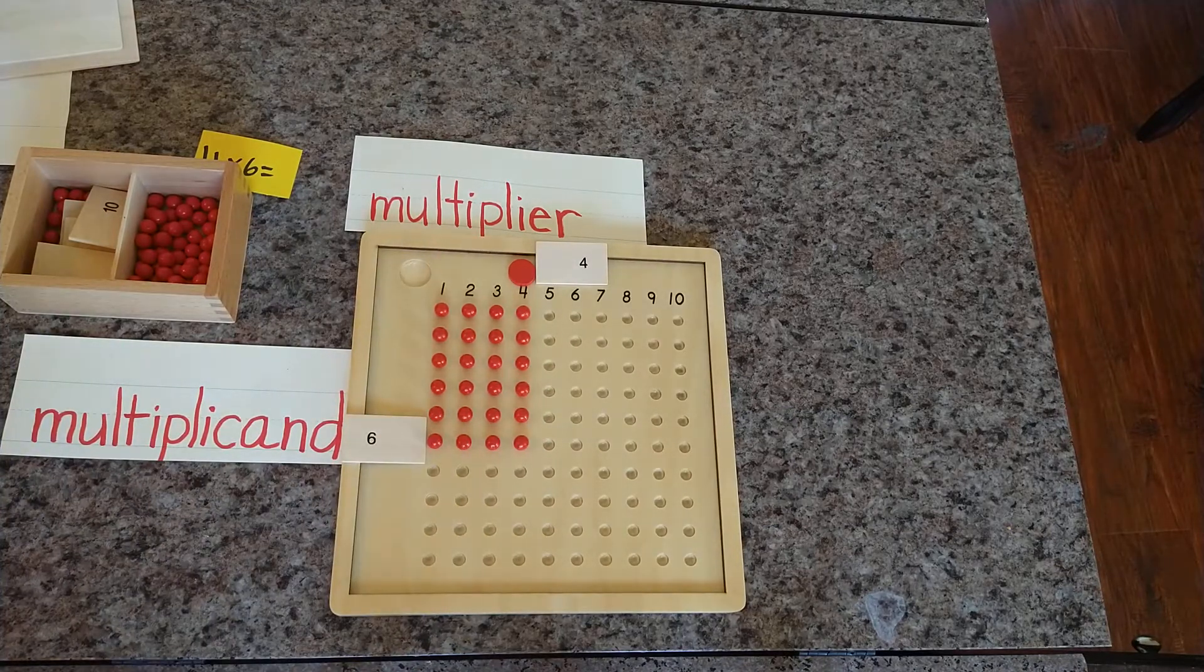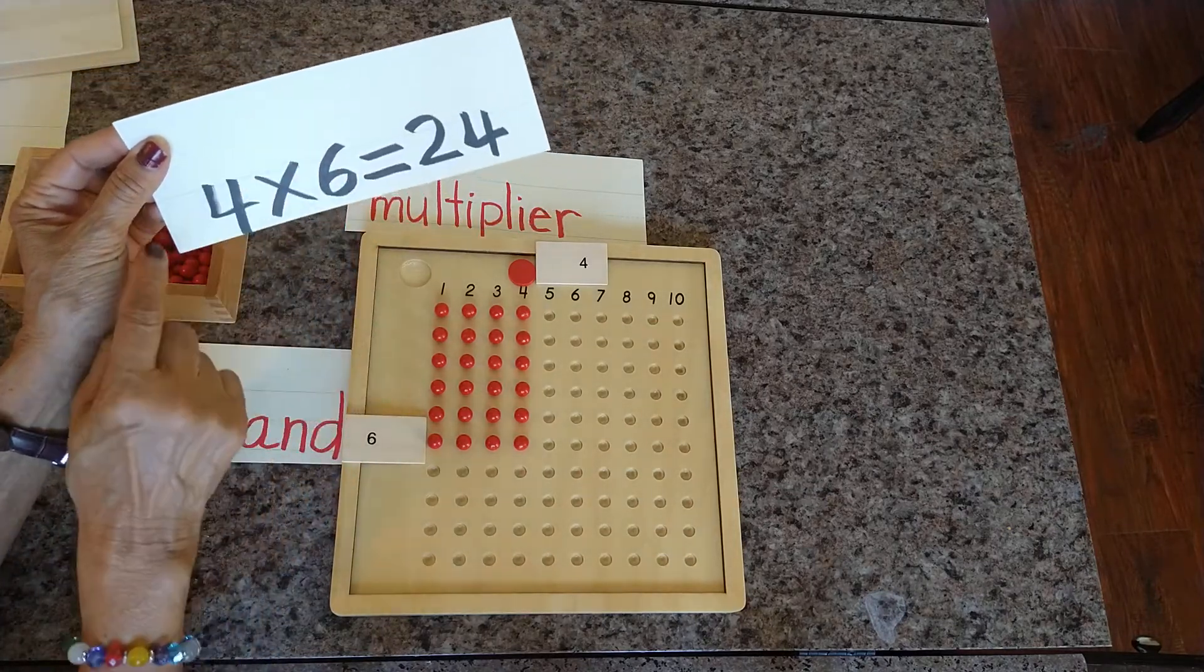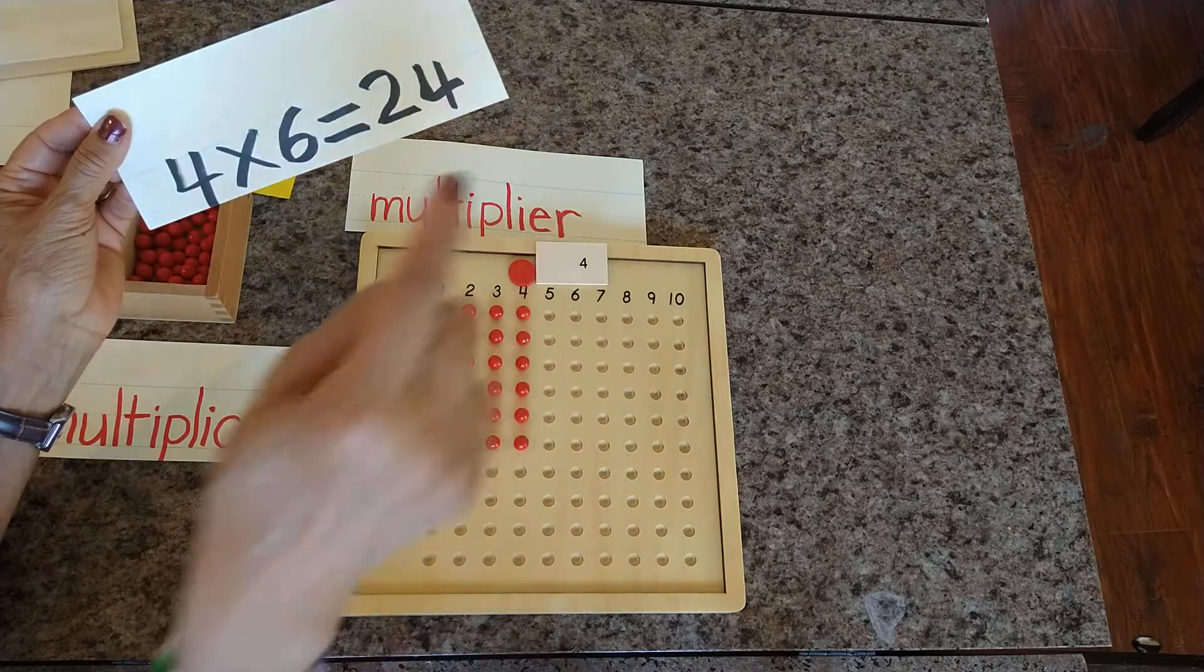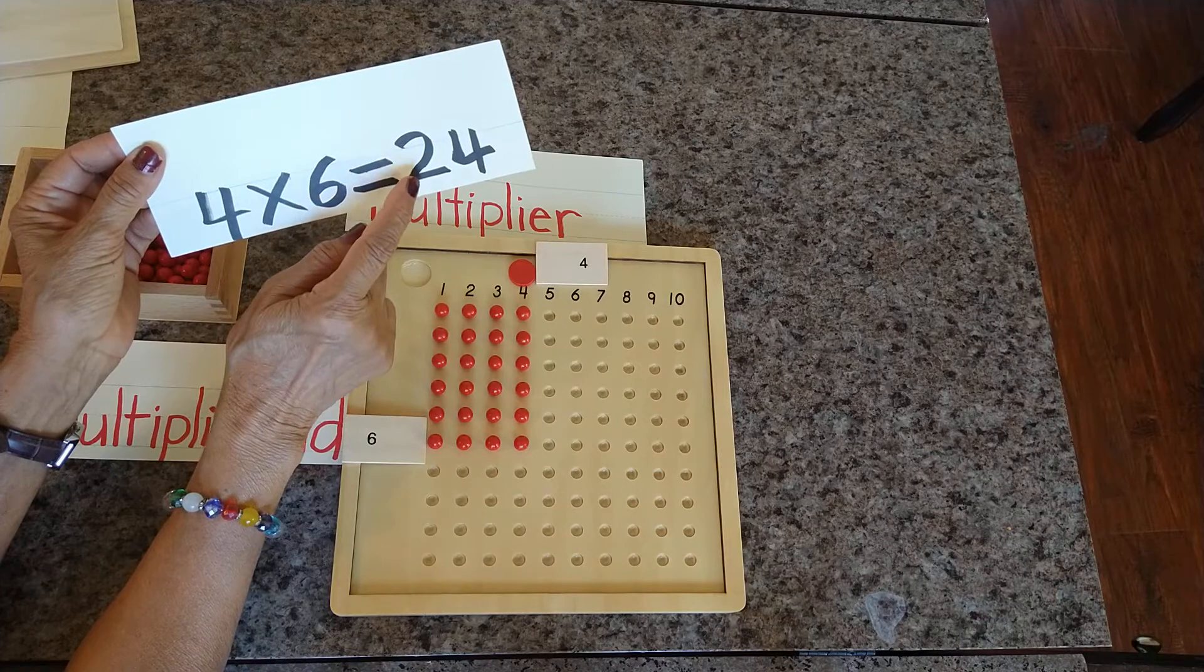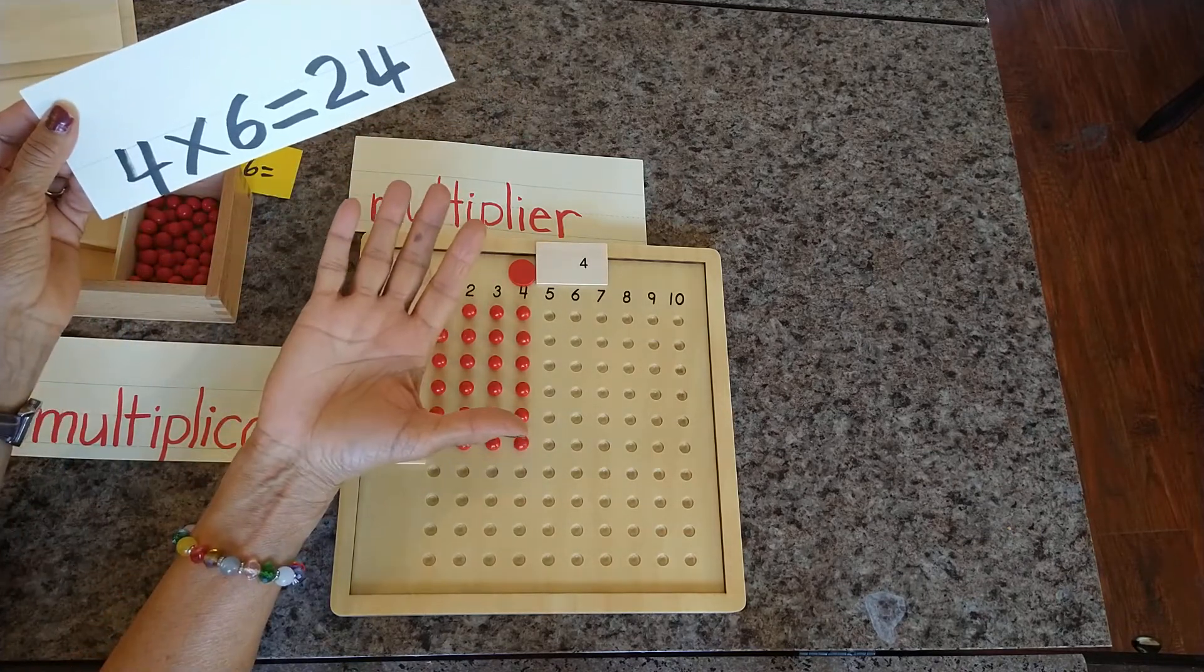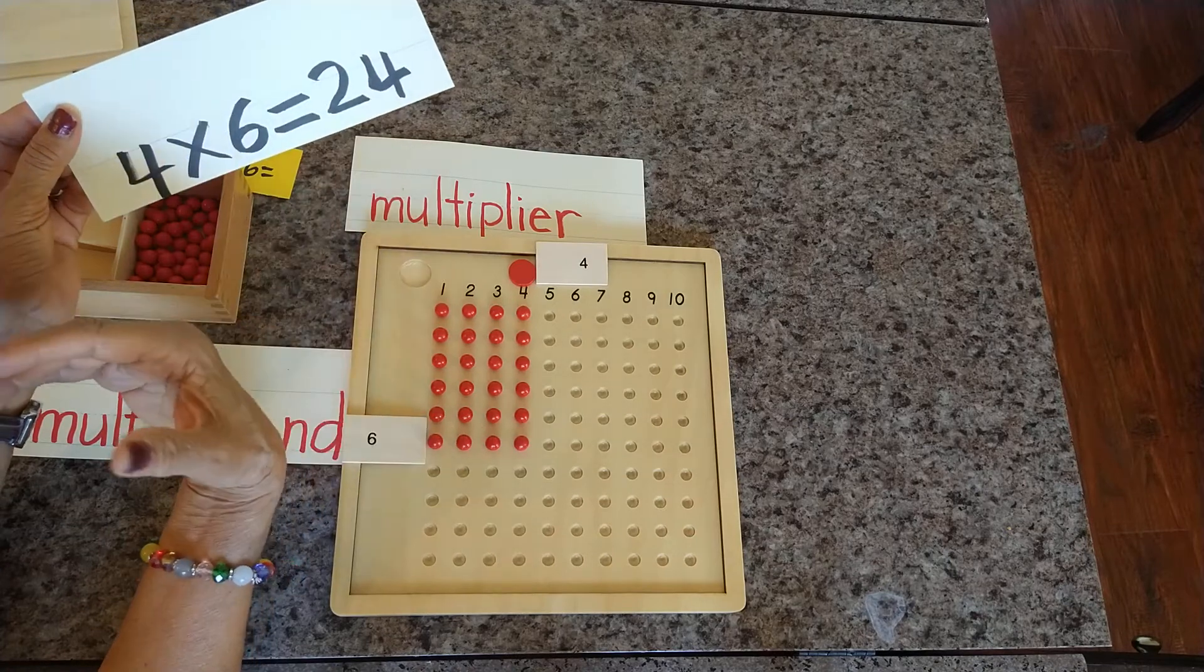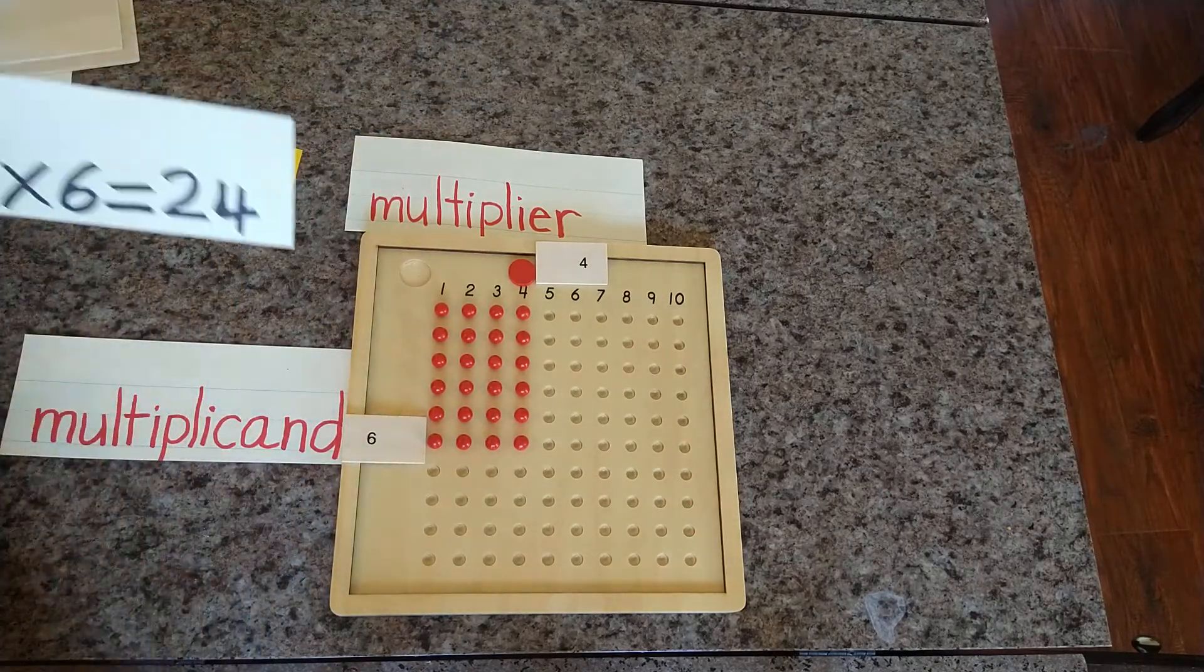Our answer is 24. 4 times 6, so we bring 4 times 6. So we got 24. 24 is our product. When we are doing multiplication, the answer is called, that's correct, product. So our product is 24.